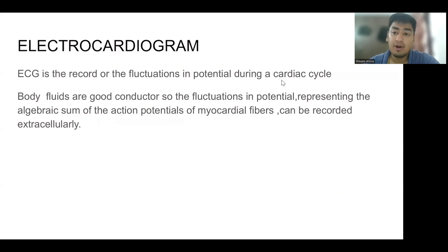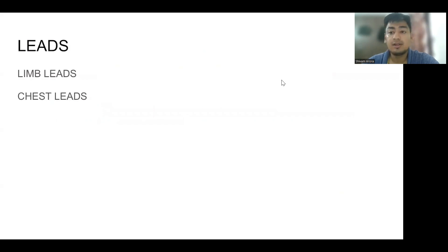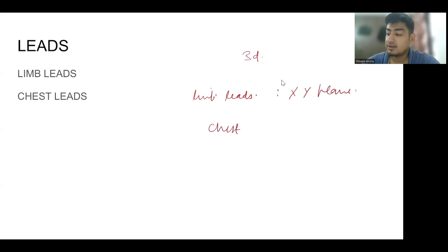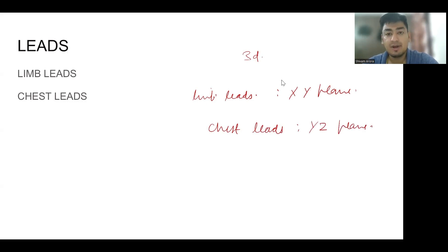ECG is the record of the fluctuations in potential during cardiac activity. Since our body contains fluids which are good conductors, the fluctuation in potential can be easily recorded. We have different types of leads in an ECG. Our heart is a 3D structure, so limb leads record the electrical potential in an XY plane while chest leads record action potential in a YZ plane. In this way we can see the heart from different angles to understand its 3D structure.